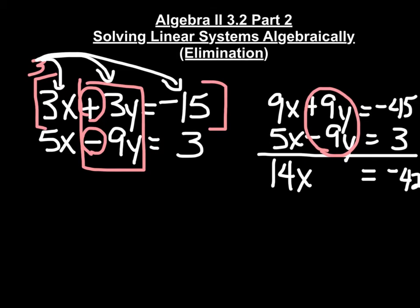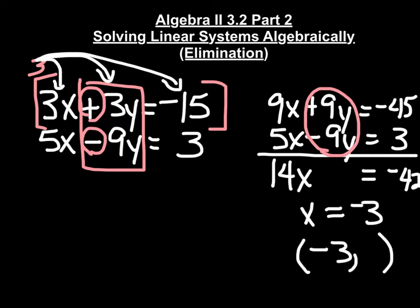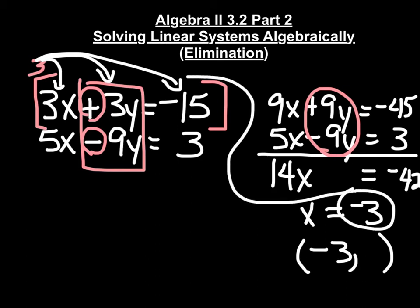When we solve for x by dividing by 14, we get x equals negative 3. Remember, we're looking for an ordered pair as a solution. Now that we know x equals negative 3, that's the first part. To find the second part, we're going to substitute x equals negative 3 back into either one of the original equations.